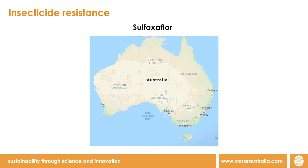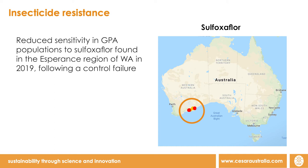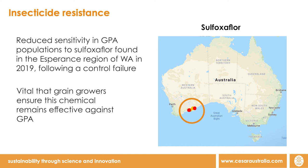Worryingly, in testing undertaken in 2019 following a control failure, several populations of GPA in the Esperance region of WA demonstrated reduced sensitivity to sulfoxiflor, the last of the five registered actives. So far no other tested populations have demonstrated similar results to sulfoxiflor, but it is important to grain growers that we ensure this chemical remains viable into the future.